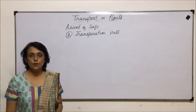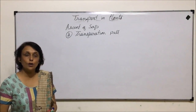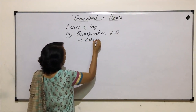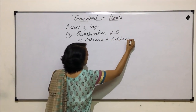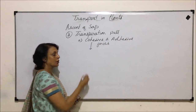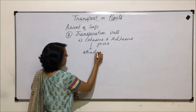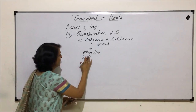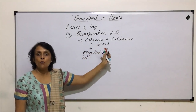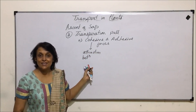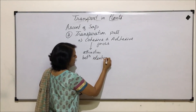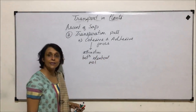The principles or forces on which transpiration pull works are cohesive force and adhesive force. Cohesive force is the attraction between the same type of particles. Since we are talking of transpiration and loss of water, here we mean the force of attraction which exists between water molecules or identical molecules. That force of attraction is known as cohesive force.